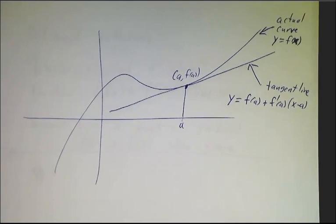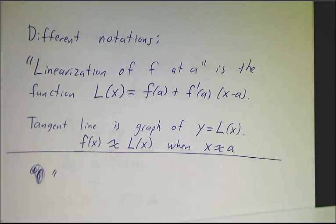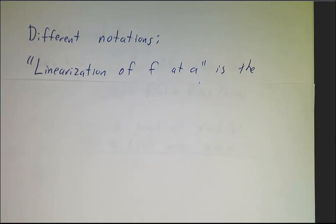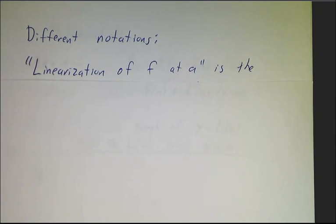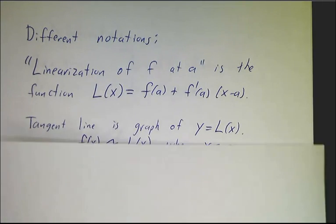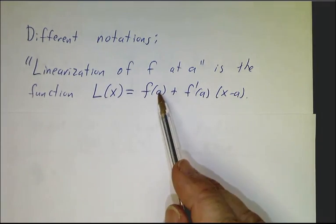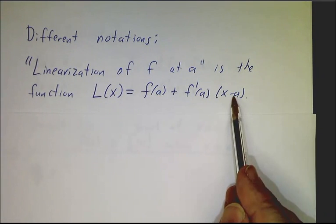Now, there are a bunch of different names for this. This is what gets confusing sometimes. The book talks about the linearization of f at a. That means the function that we've been talking about, the function whose value is f(a) plus the derivative times x minus a.